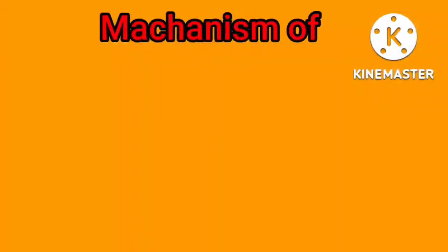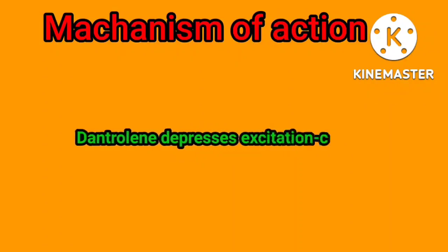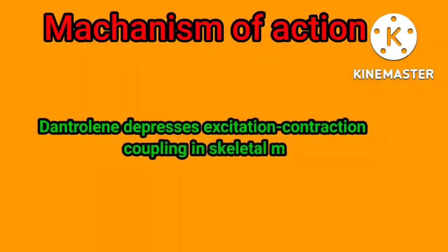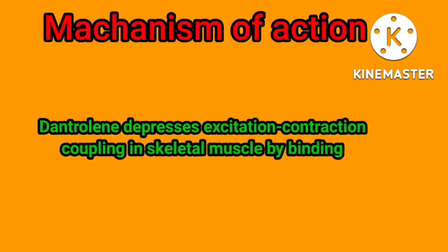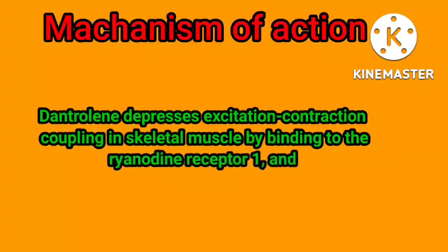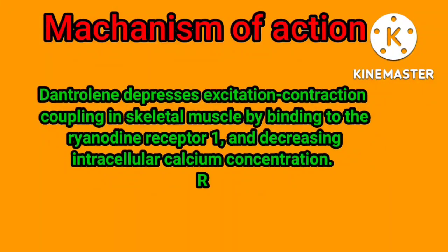Mechanism of Action: Dantrolene depresses excitation-contraction coupling in skeletal muscle by binding to the ryanodine receptor 1, and decreasing intracellular calcium concentration.